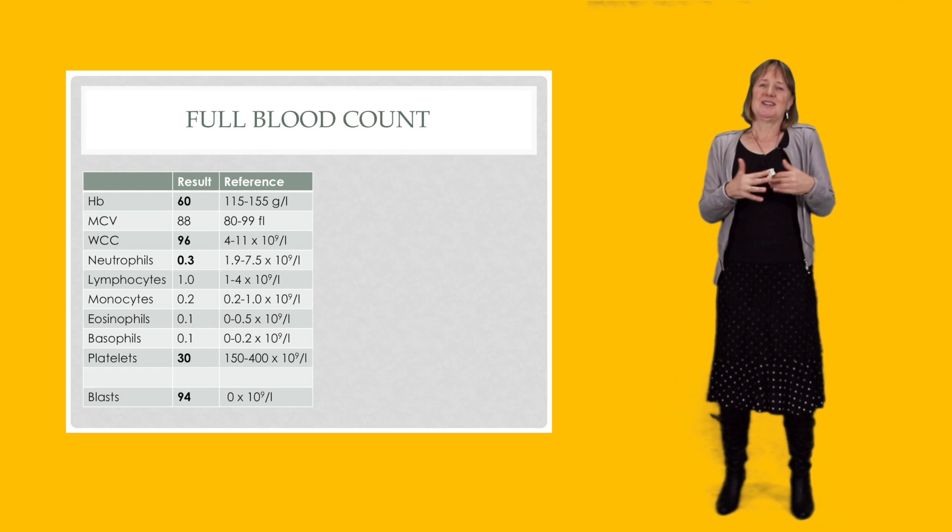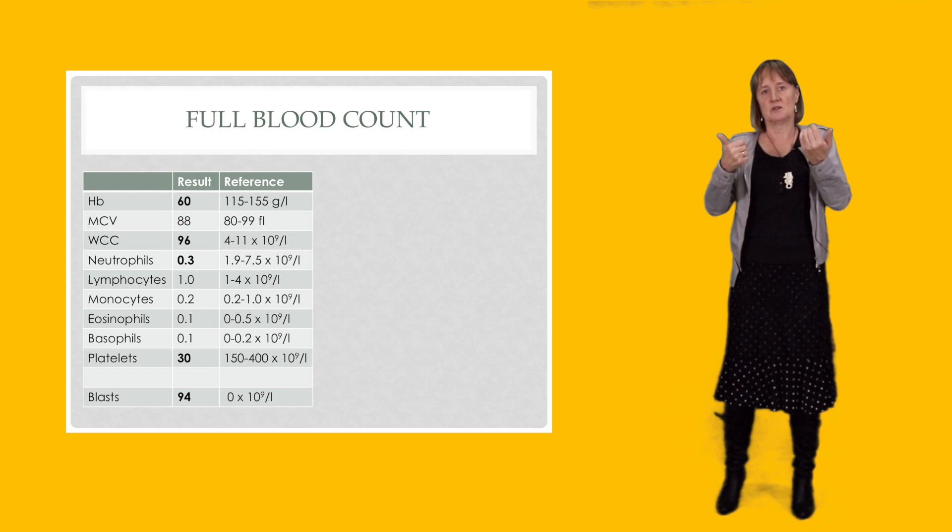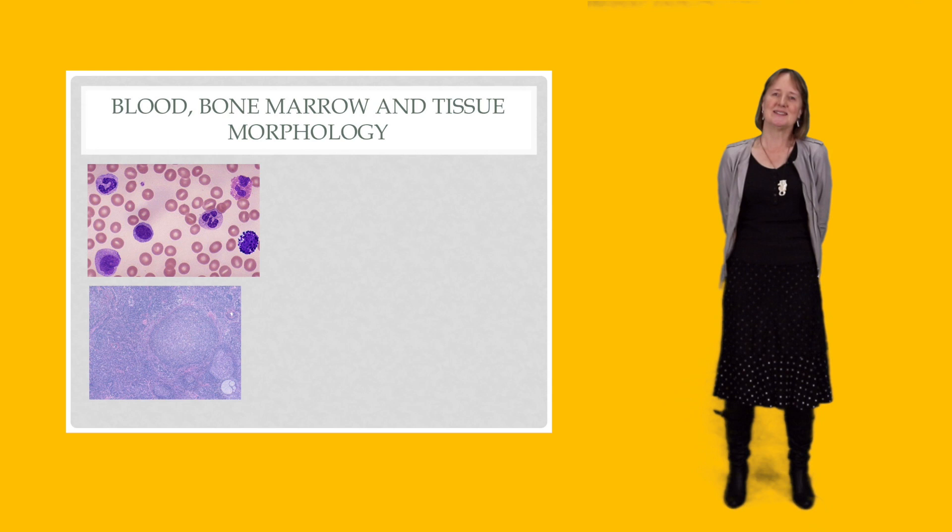I'm not telling you this because you have to know how to diagnose acute leukemia. That's a diagnosis that is generally made in the laboratory and communicated to you. But just as an example of how these conditions can affect the blood count. So what we've got here are features of bone marrow failure and features of an accumulating abnormal clone which is now manifest in the peripheral blood.